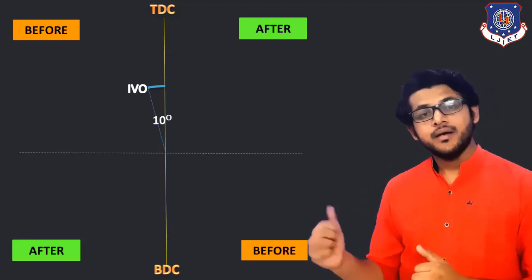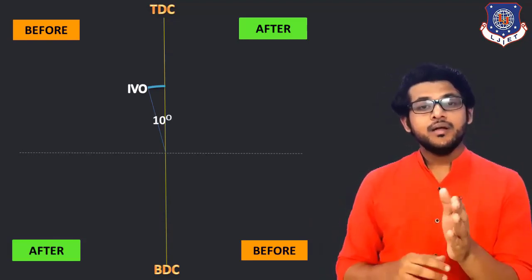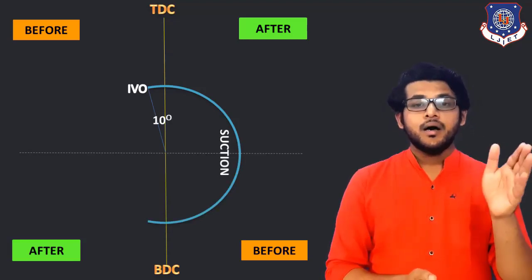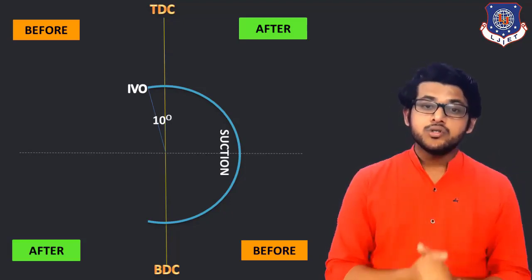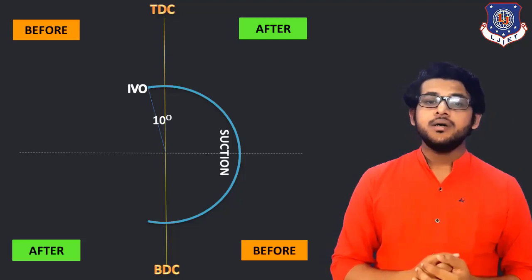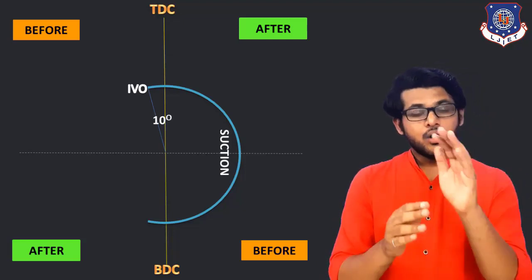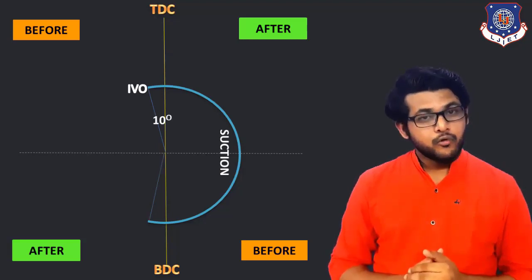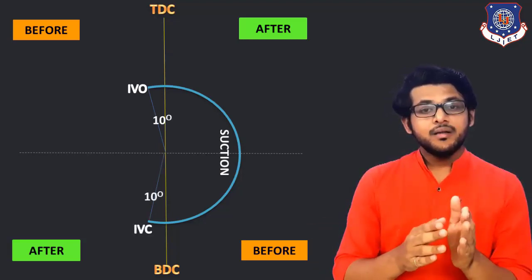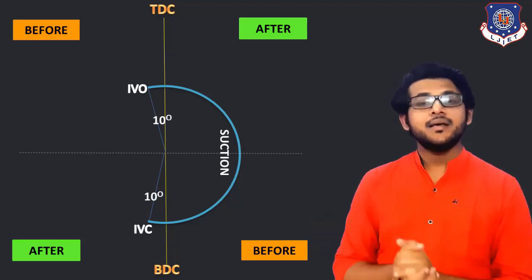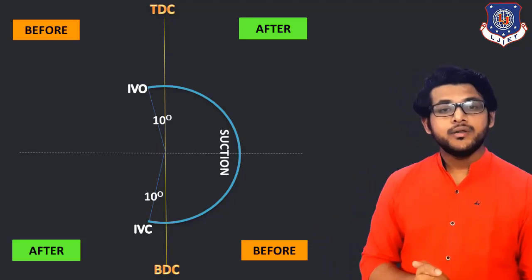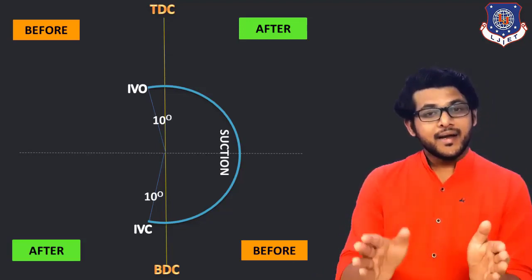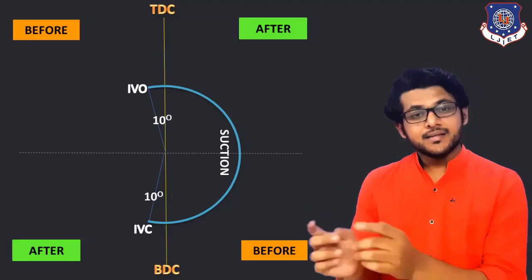You can see in the figure that it is opening 10 degrees before TDC. Thereafter it will remain open throughout the suction process. When the piston reaches BDC it should also remain open because we are still suctioning all the fuel inside the engine. Now the piston is at BDC, all the suction is completed, and the inlet valve will start closing. We provide 10 degrees for that closing, so it will be fully closed — IVC, Inlet Valve Closed — at 10 degrees after BDC.